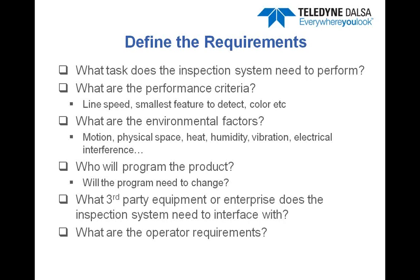Another consideration is: do the parts change? Do we run different products down the same line? How is this accomplished — is it manual switchover? Can different parts come down on the same line? All these things need to be accounted for when defining the requirements. Also, who's going to maintain the system? Sometimes one person will program it and then hand it off to plant engineers to maintain it. Will the machine vision system need to interface to other plant equipment — PLCs, robots, enterprise systems? And what are the requirements for the operator? It could just be a simple red light, green light, pass-fail, up through a custom PC interface.